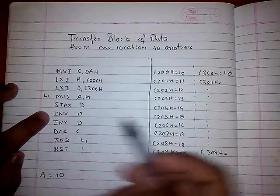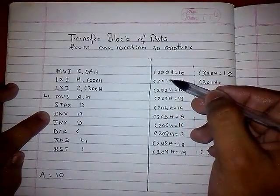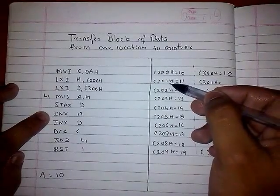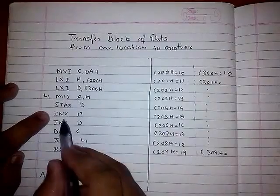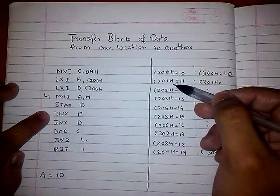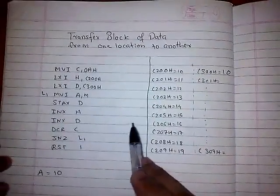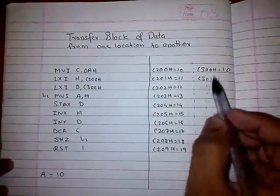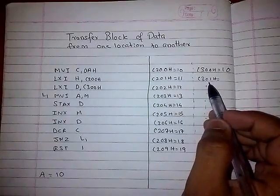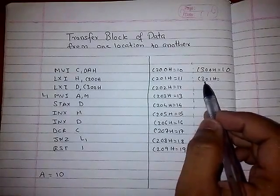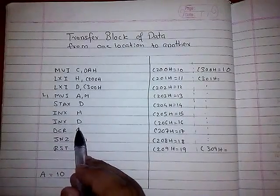Now INX H. This is our HL register pair. When we do INX H, it will increment to another location. Currently we are on C200H; when we do INX H, we will be on C201H. Since our work is now done with C300H, we want to move to the next consecutive memory location, which is C301. For that, we will do INX D.